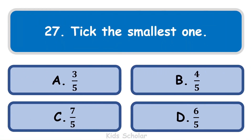Next question is: tick the smallest fraction. The options are 3 by 5, 4 by 5, 7 by 5, and 6 by 5. All denominators are the same, so the fraction with the smallest numerator is the smallest. Therefore, 3 by 5 is the smallest fraction.